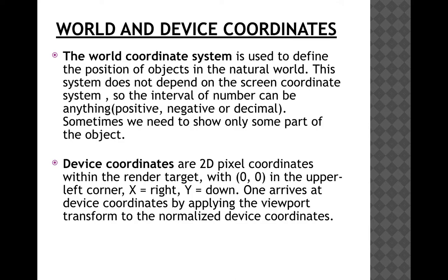Sometimes the complete picture is too large and complicated to show on the screen, and we need to show only a small part of it, because of which there comes the device coordinate system. The device coordinates are 2D pixel coordinates within the render target, with (0,0) in the upper left corner. One arrives at device coordinates by applying the viewport transform to the normalized device coordinates.